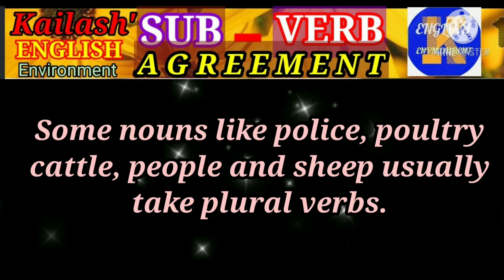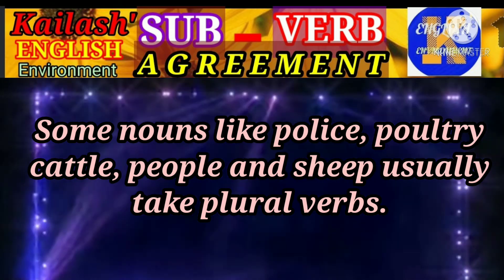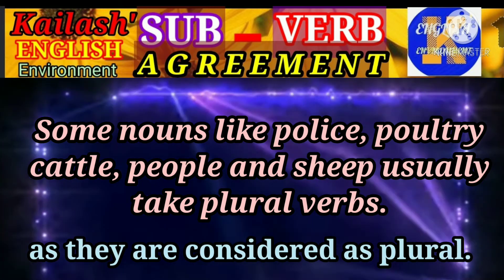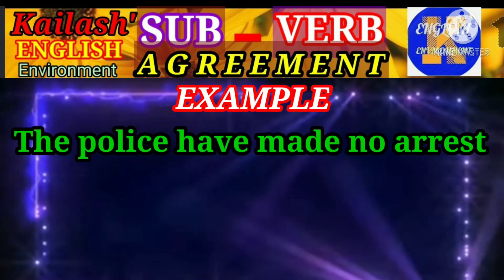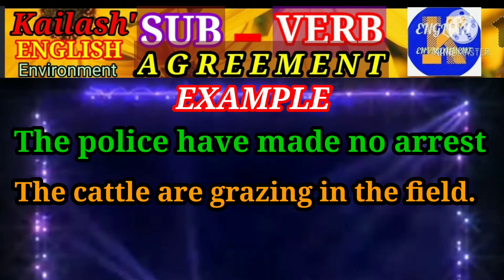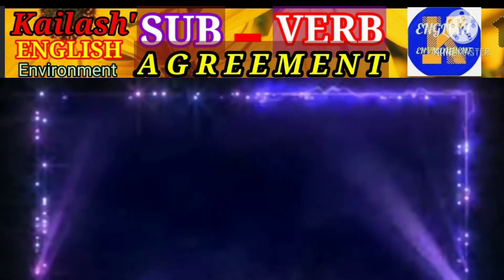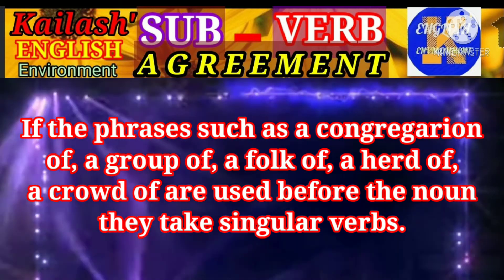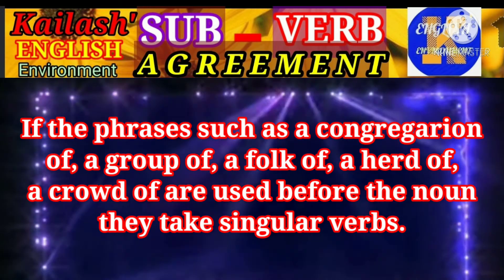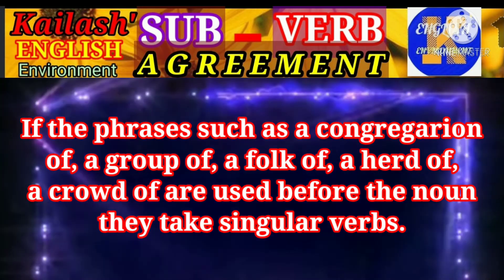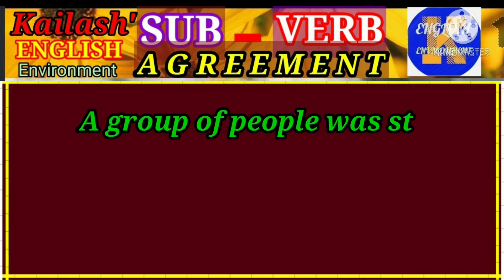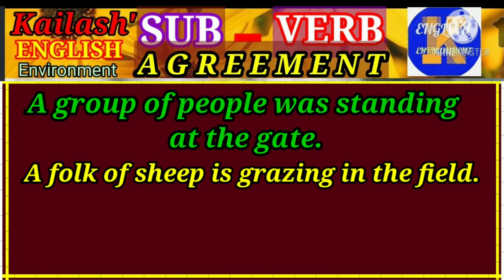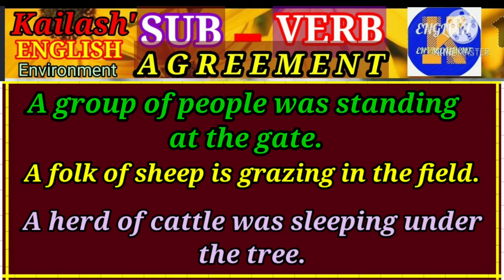Nouns like police, poultry, cattle, people, and sheep usually take plural verbs as they are considered plural. For example, 'The police have not made any arrest.' 'The cattle are grazing in the field.' 'The poultry have been paid.' But, students, if phrases like 'a congregation of,' 'a group of,' 'a flock of,' 'a herd of,' 'a crowd of' are added before the nouns, they take a singular verb. For example, 'A group of people was standing at the gate.' 'A flock of sheep is grazing in the field.' 'A herd of cattle was sleeping under the tree.'